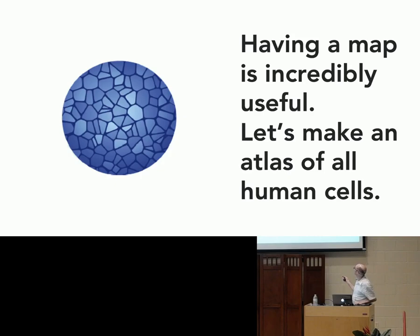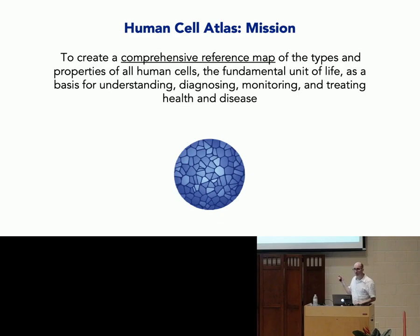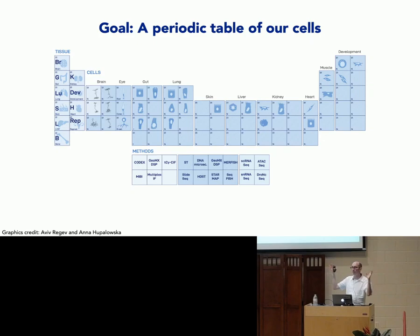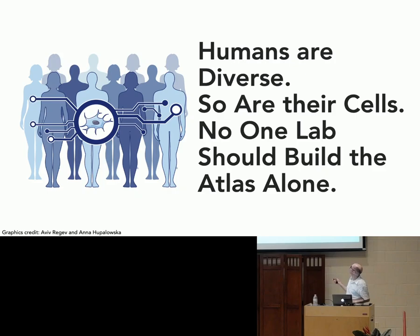So let's make an Atlas of all the human cells. The Human Cell Atlas project is a large international scientific project whose goal is to create a comprehensive reference map of the types and properties of all human cells. The ultimate goal — one analogy to chemistry — is that maybe we could eventually have a periodic table of the cells. The nice thing about the periodic table is that it's pretty complete, so you can really understand the structure and how everything's related to each other. If we could do that with cells, that would be very beneficial.